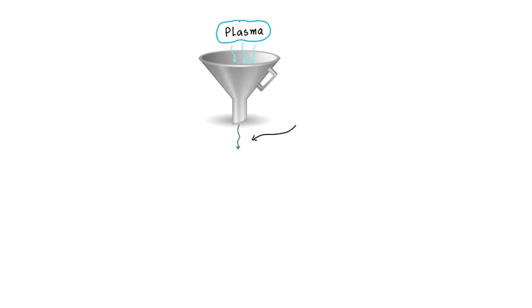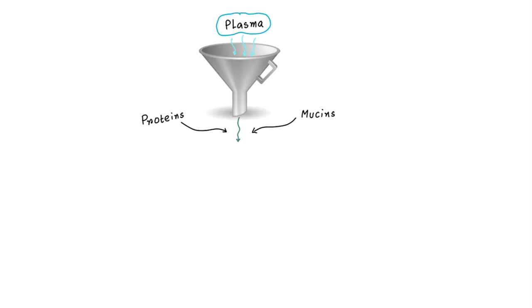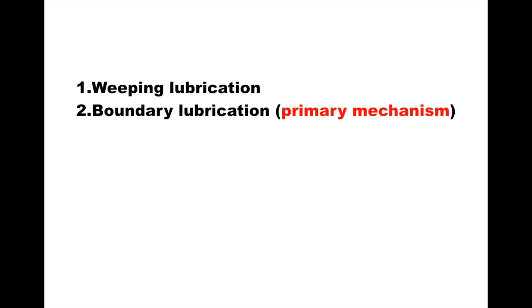Synovial fluid is a filtrate of plasma with added mucins and proteins. Its main constituent is hyaluronic acid. Synovial fluid lubricates the articular surface by two mechanisms: boundary lubrication and weeping lubrication. You should remember that boundary lubrication is the primary mechanism of joint lubrication.